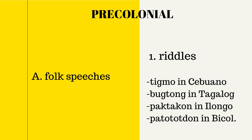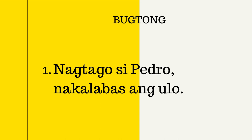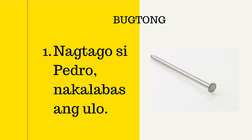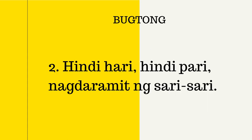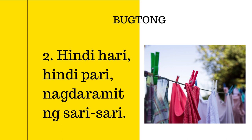Folk speeches came in many forms. One of these was riddles. Different provinces had different names for riddles — tigmo, bugtong, paktakon, and patototdon. The correct answer to our first riddle is nail or pako. For the second riddle, 'Hindi hari, hindi pari, nagdaramit ng sari-sari,' if you answered sampayan or clothesline, you are correct. Can you give an example of a riddle that you have known since you were a child? Please write your answer in the comments.